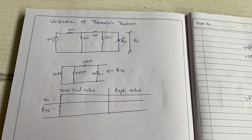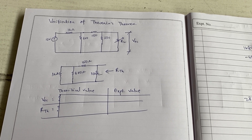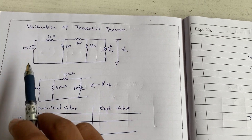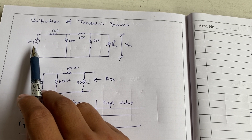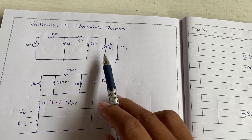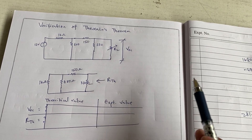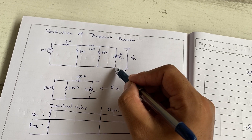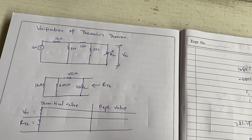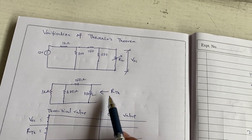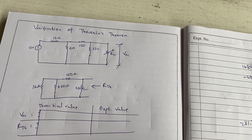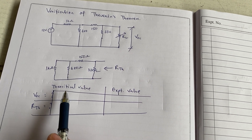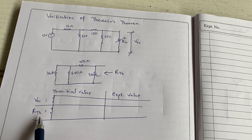In this practical video we are going to verify Thevenin's theorem. This is the circuit diagram — we have a supply voltage of 12 volts and RL is also connected. In this verification we have to find the open circuit voltage measured across RL, and we should also calculate RTH when the voltage source is shorted. This is how the observation table looks: we have theoretical values where we calculate VOC and RTH theoretically.